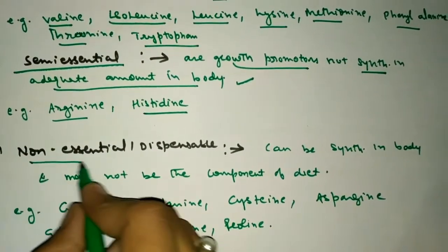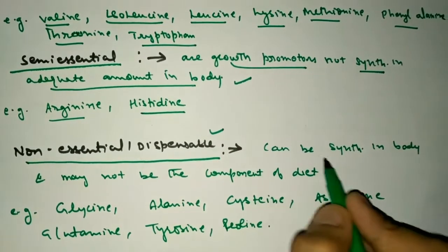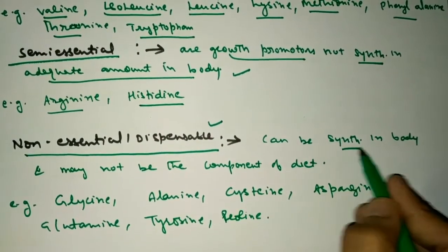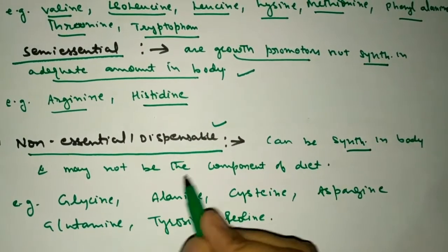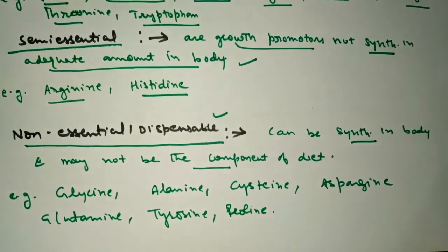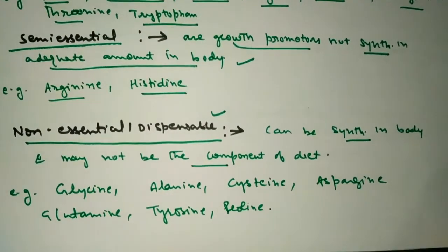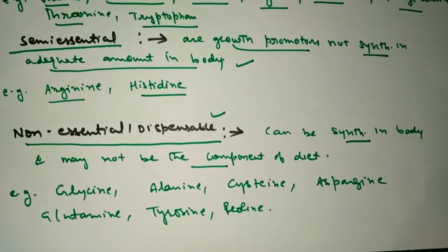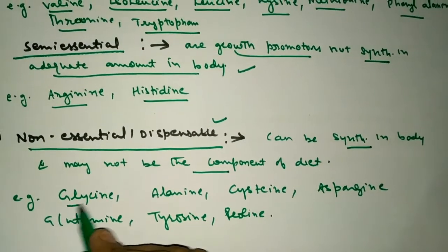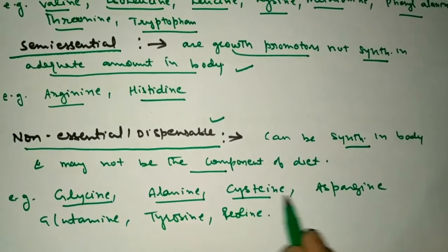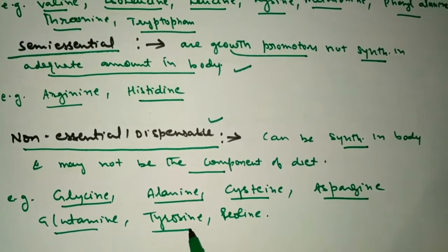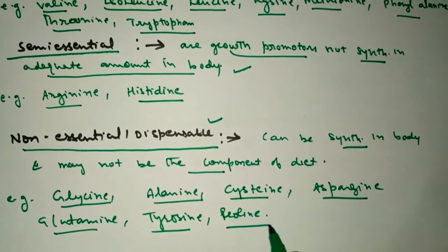Third are the non-essential or dispensable amino acids. They can be synthesized in the body and are not a main component of the diet. Lack of their existence in the diet causes no malnutritional disorder. These are glycine, alanine, cysteine, asparagine, glutamine, tyrosine, and proline.